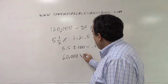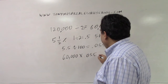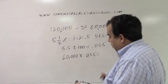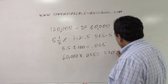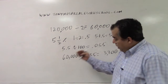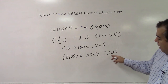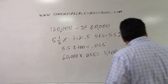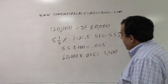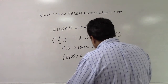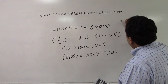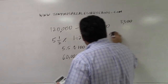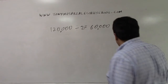So if I take $60,000 multiplied by 0.055, that gives me $3,300. The commission that's going to be paid on the first half of the price is $3,300.